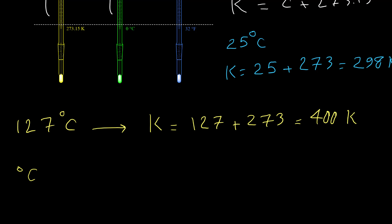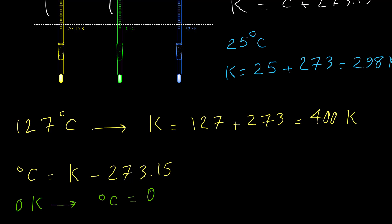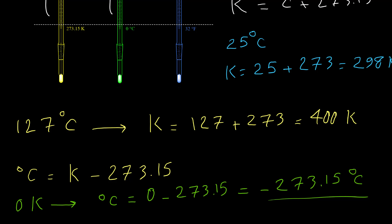To calculate Celsius from Kelvin, the equation is: Celsius = Kelvin − 273.15. For example, converting 0 Kelvin to Celsius: 0 − 273.15 = −273.15°C. That is the lowest temperature reachable in the universe — absolute zero.